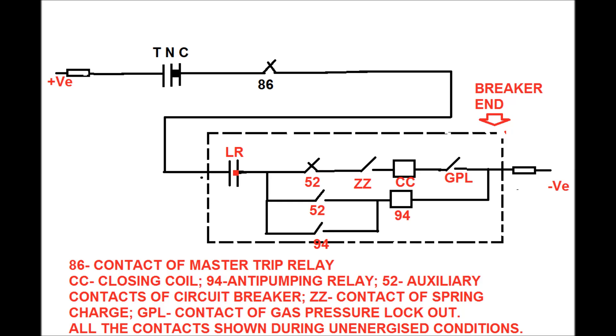94 is the anti-pumping relay and its auxiliary contact is shown in this figure. GPL is the gas pressure lockout contact. If gas pressure is normal then this contact is in close position.